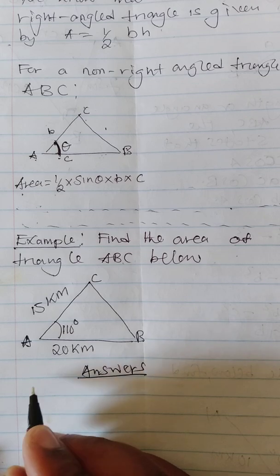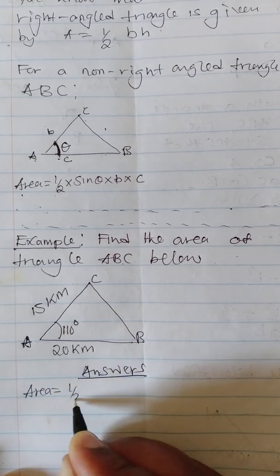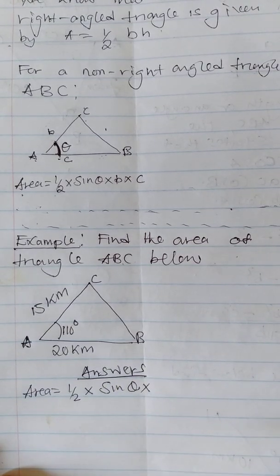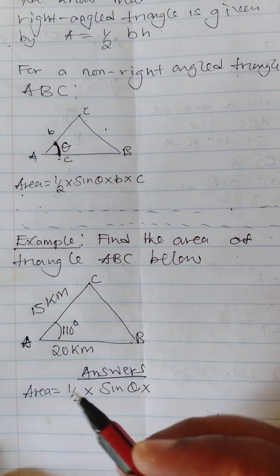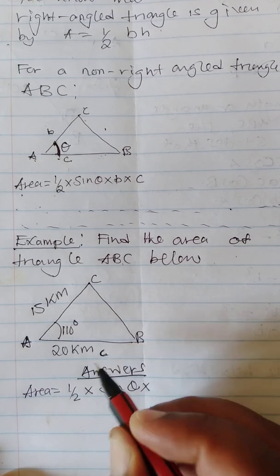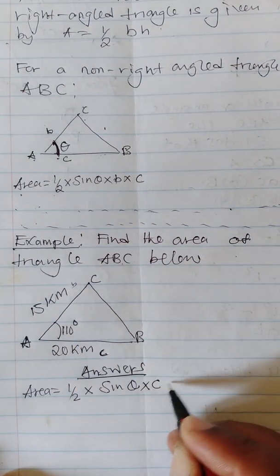You multiply by sin theta, then multiply by the two sides given. In this case, we note that this is c and this is b, so we need to multiply by c by b. Area is equal to half multiplied by sin of the angle.